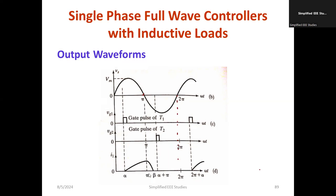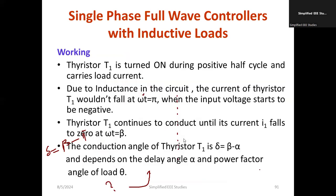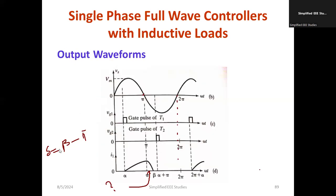The conduction angle delta equals beta minus alpha. This region — from alpha to beta — represents that duration, which is known as beta minus alpha. So it starts from alpha and ends at beta, and that duration is the conduction angle delta. This delay must be accounted for, and the conduction angle depends on the delay angle alpha and the power factor of the load theta.